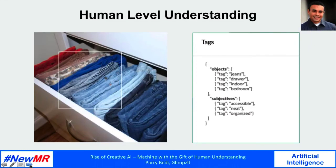What this gives us is the capability to analyze each and every piece of unstructured data for both objective markers as well as subjective context that almost mimics a human level of analysis. For example, while objectively an image might be tagged as 'jeans and drawers,' our AI system is also able to identify human-level tags like 'organized,' 'accessible,' or 'neat.'